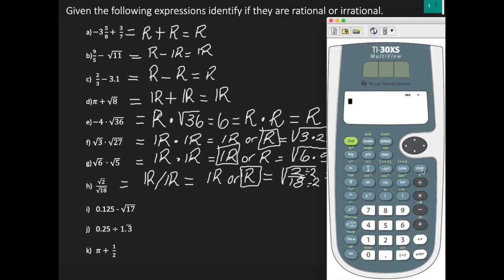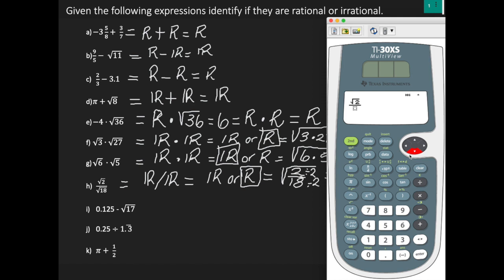If we use the calculator, press n over d for the fraction, then second function, x squared in the numerator position and input 2. Come down to the denominator, press second function, x squared and input 18. Go to the right twice, then hit enter. The calculator gives you 1 over 3. And 1 over 3 is a fraction — all fractions are rational numbers.